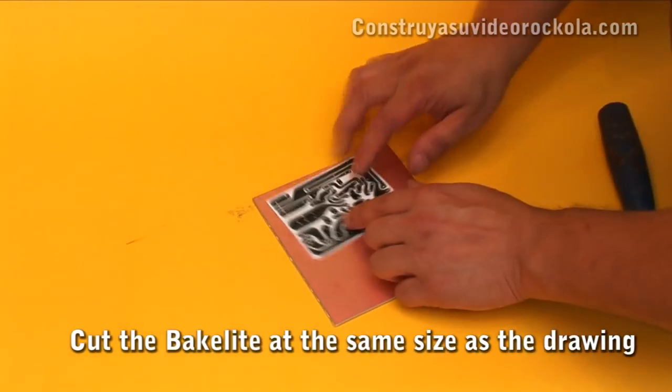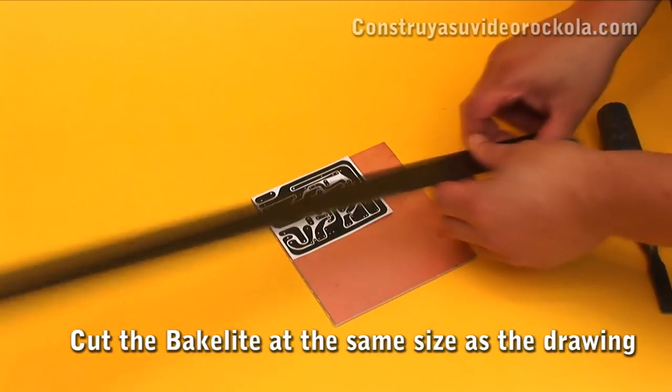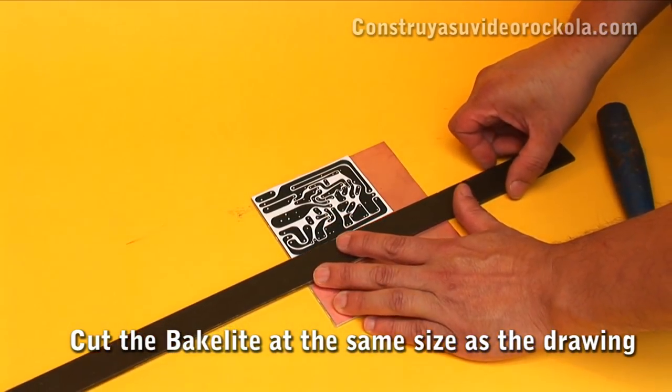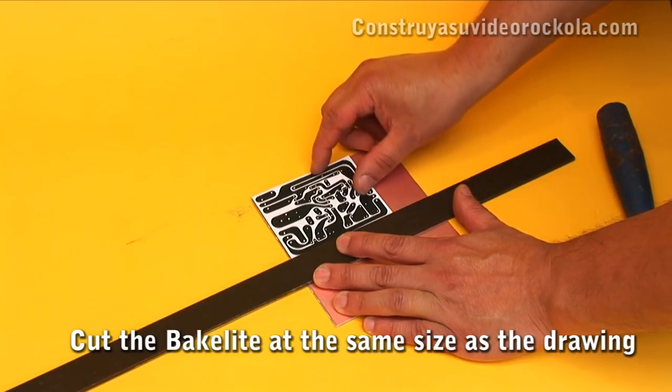With a sharp chisel and a steel ruler, we take as our guide the drawing of the circuit board and we cut the bakelite at this same size.